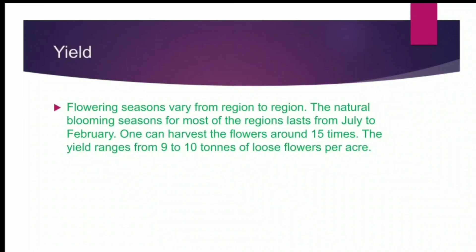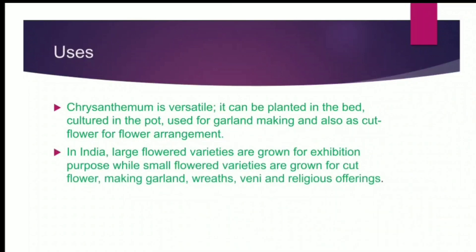Yield. Flowering seasons vary from region to region. The natural blooming season for most regions lasts from July to February, and one can harvest flowers around 15 times. The yield ranges from 9 to 10 tons of loose flowers per acre. Usage: Chrysanthemum is versatile — it can be planted in beds, cultured in pots, used for garden making, and also as cut flowers for flower arrangement. In India, large flower varieties are grown for exhibition purposes, while small flower varieties are grown for cut flowers, making garlands, bouquets, and religious offerings.